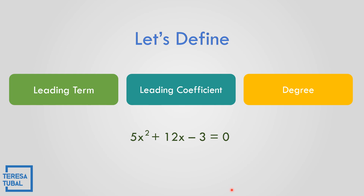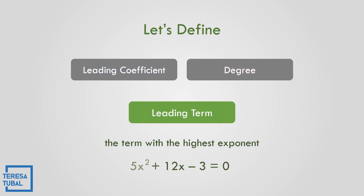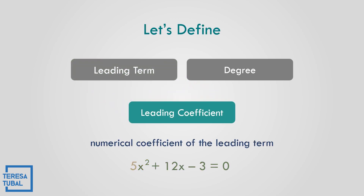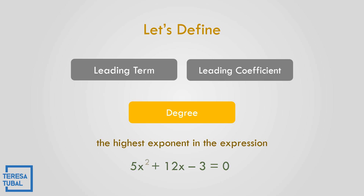Let us define the leading term, the leading coefficient, and the degree. The leading term is the term with the highest exponent — so 5X squared is the leading term. The leading coefficient is the numerical coefficient of the leading term, which is 5. The degree is the highest exponent in the expression, which is 2.